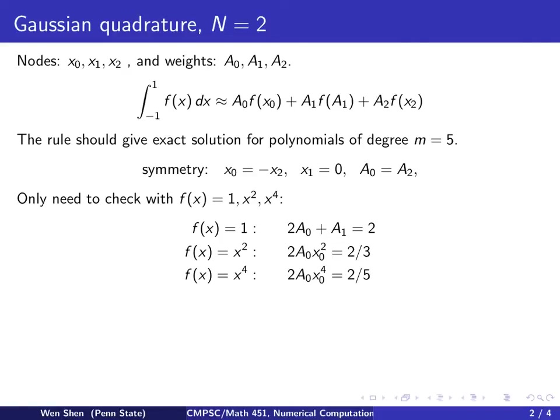Finally, f equal to x to the power of 4. And again, by using the symmetry, we only will have twice of this expression here because this will equal to that, and this will be 0. So that will give me 2A0 and x0 to the power of 4. This is f at x0, right? And then integrating x to the 4 from negative 1 to 1, this will give me 2/5.